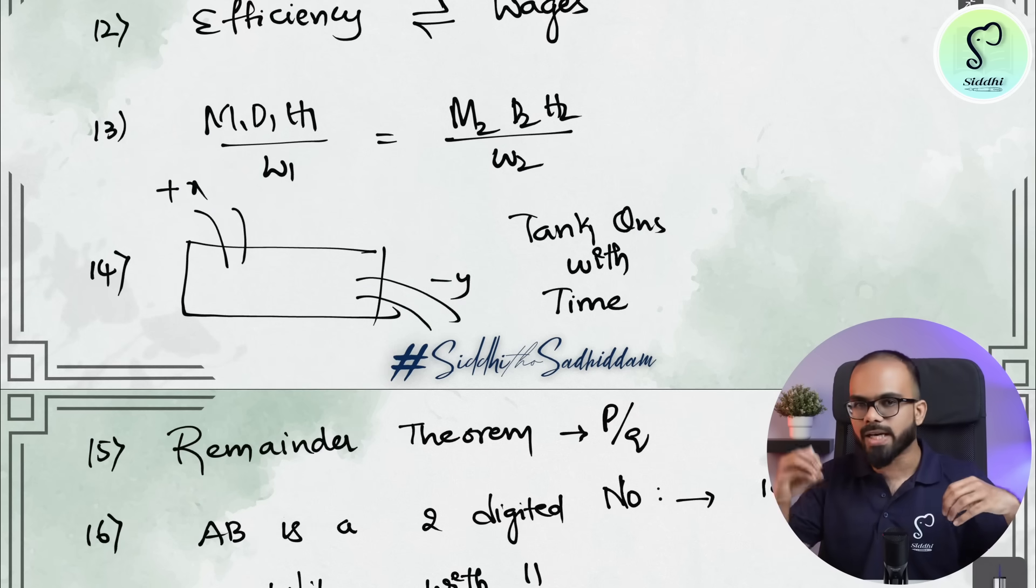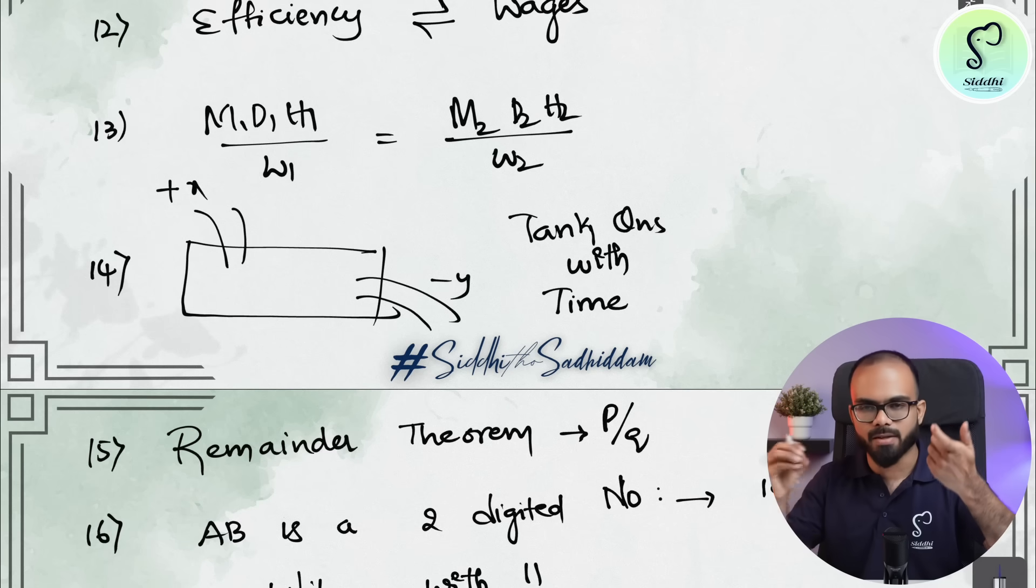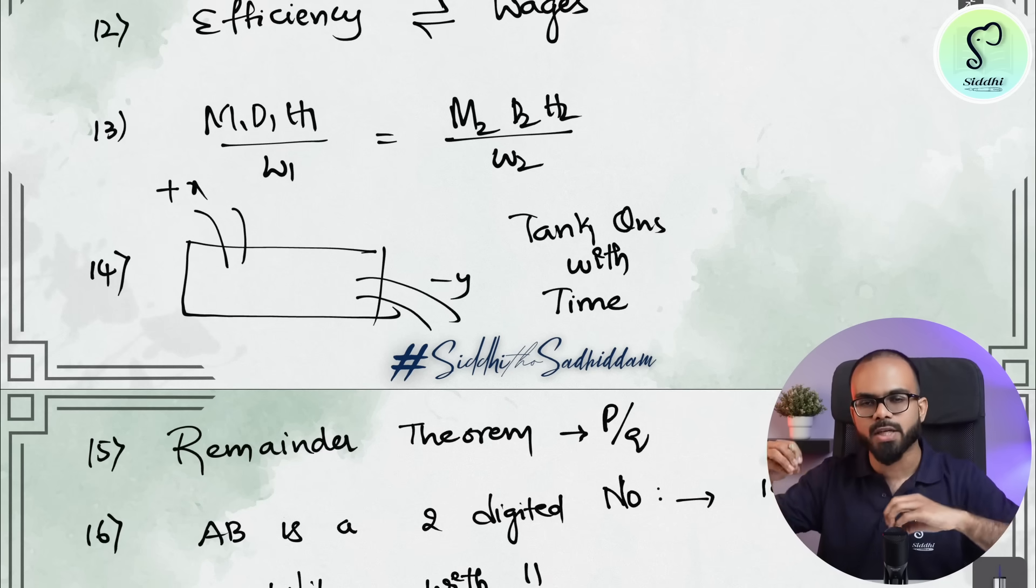Questions in pipes and cisterns where you have tap filling and tap emptying and their time is also involved. For example, the question will say three taps are opened at a particular time A, B, C and when you need to close the taps, etc.